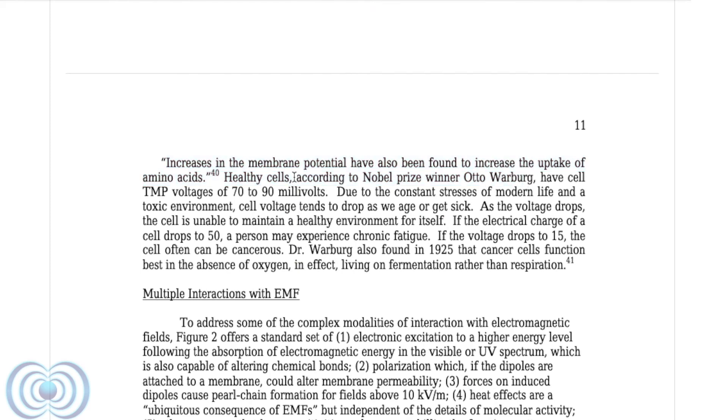Healthy cells, according to the Nobel Prize winner Otto Warburg, have cell TMP voltages of 70 to 90 millivolts. Due to the consistent stresses of modern life and toxic environment, cell voltage tends to drop as we age or get sick. As the voltage drops, the cell is unable to maintain healthy environment for itself. If the electrical charge of a cell drops to 50, a person may experience chronic fatigue. If the voltage drops to 15, the cell often can be cancerous. Dr. Warburg also found in 1925 that cancer cells function best in the absence of oxygen, in effect, living in fermentation rather than respiration.